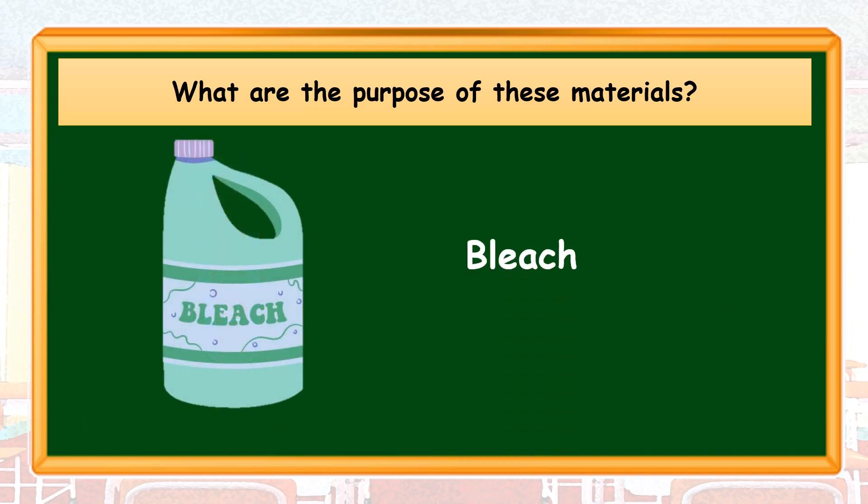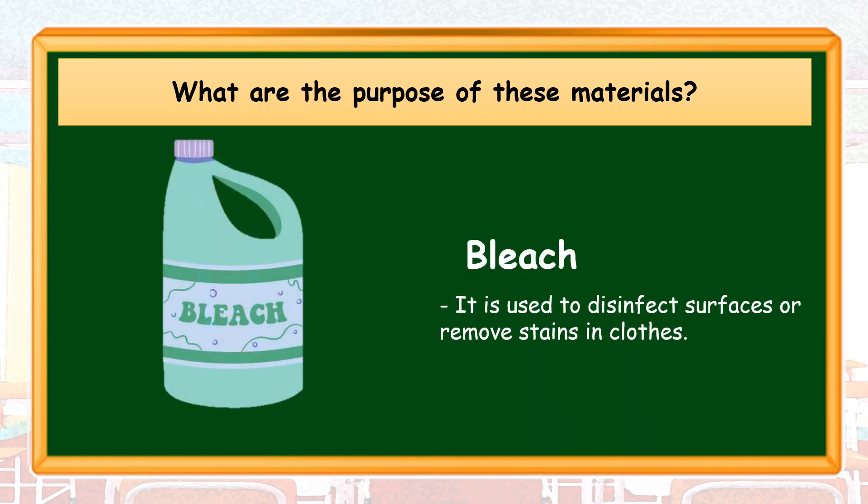Bleach. It is used to disinfect surfaces or remove stains in clothes. Bleach is an example of a cleaning agent. It is a chemical, typically a solution of sodium hypochlorite or hydrogen peroxide, used to whiten or sterilize materials. Can you name a brand of bleach that you have at home?